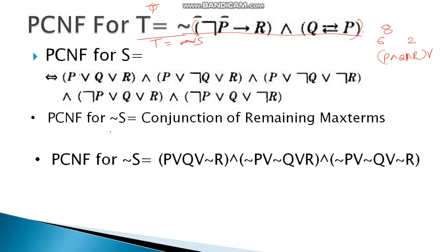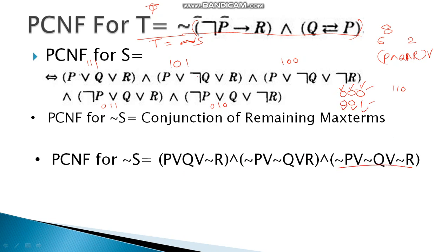Encoding the existing terms as binary (where NOT is 0, positive is 1): the PCNF of S contains 111, 101, 100, 011, 010. The missing combinations are 000, 001, and 110. So the PCNF of NOT S consists of (NOT P OR NOT Q OR NOT R), (NOT P OR NOT Q OR R), and (P OR Q OR NOT R), all conjuncted together.